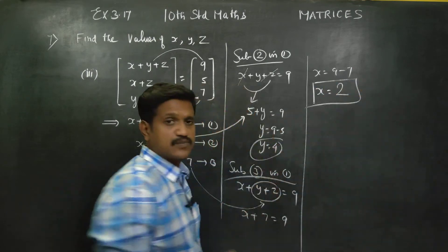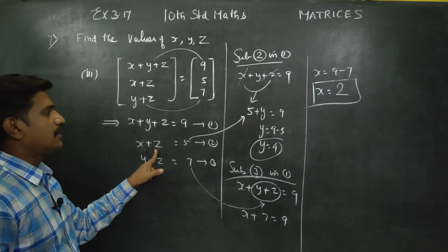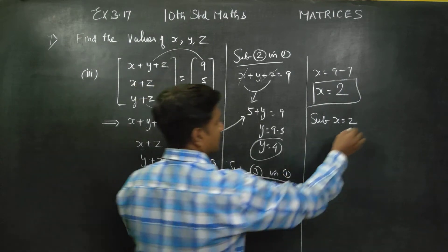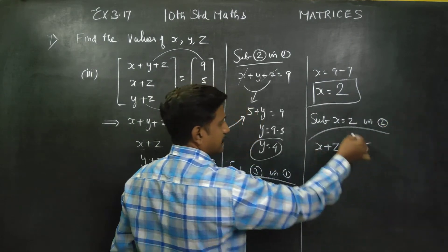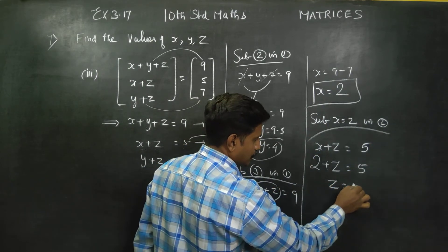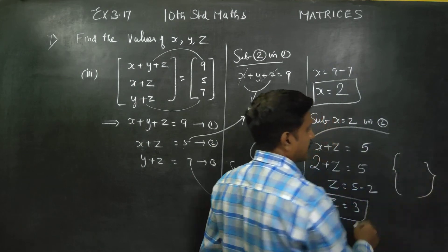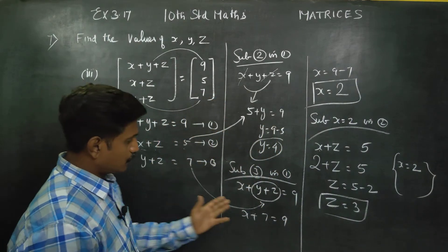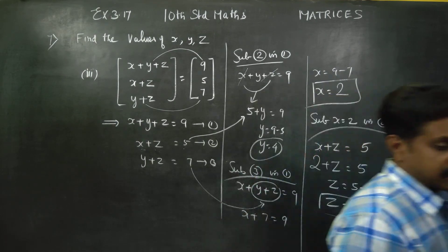x is equal to 2. Finally, substitute x equals 2 into equation number 2: x plus z is equal to 5, so 2 plus z is equal to 5, z is equal to 5 minus 2, z is equal to 3. The final answer is x is equal to 2, y is equal to 4, z is equal to 3. Thank you.